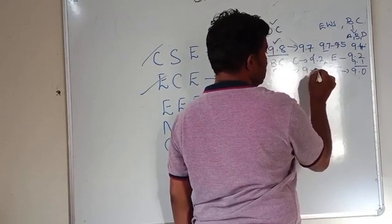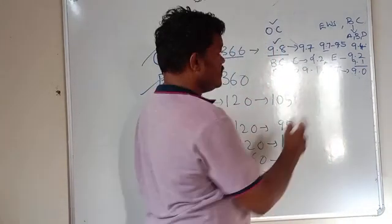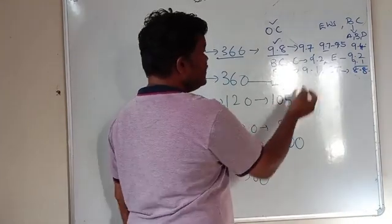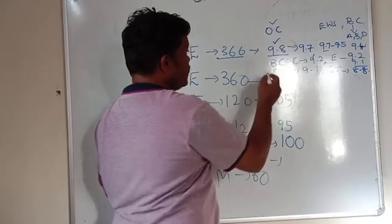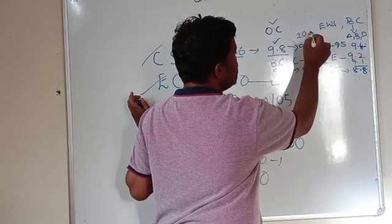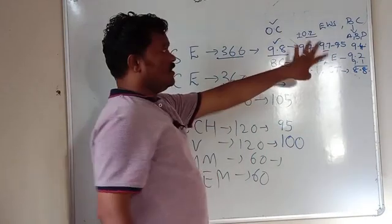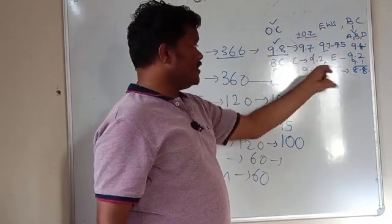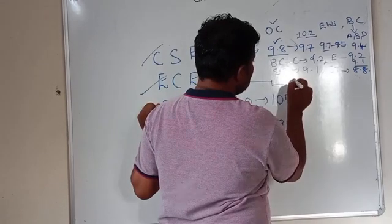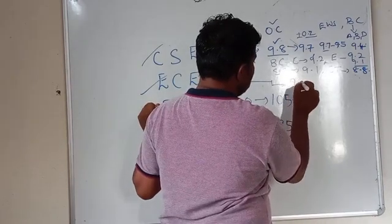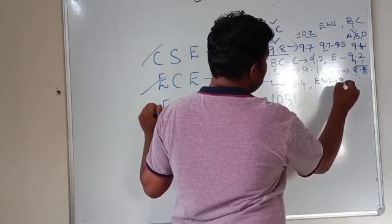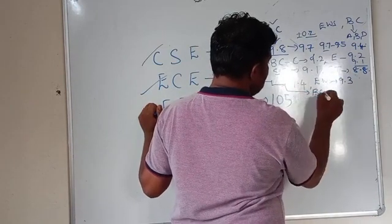SC can be up to 9.1, so it will go down from there. ST for computer science depends, maybe around 8.8 to 9.4. We will give you the right figures. There is roughly a plus or minus 0.2 variation. So for example, open is 9.4, EWS is 9.3, BC categories are around 9.1 range.